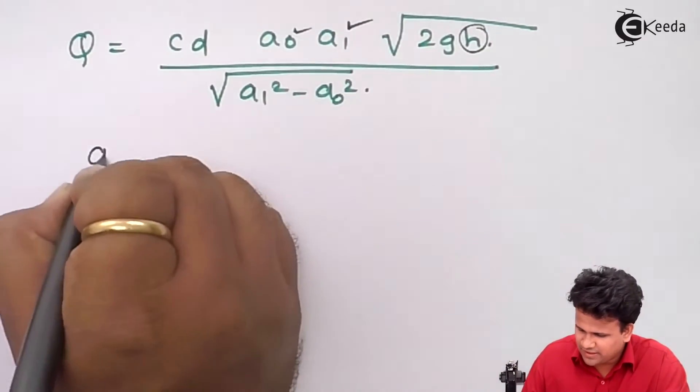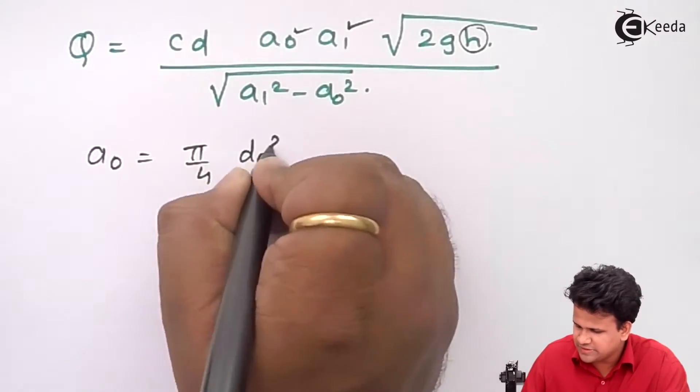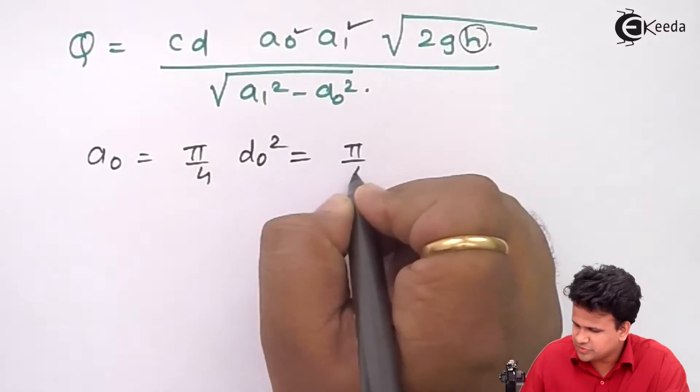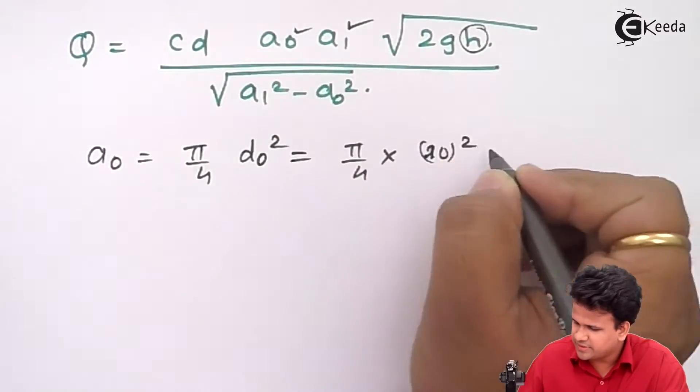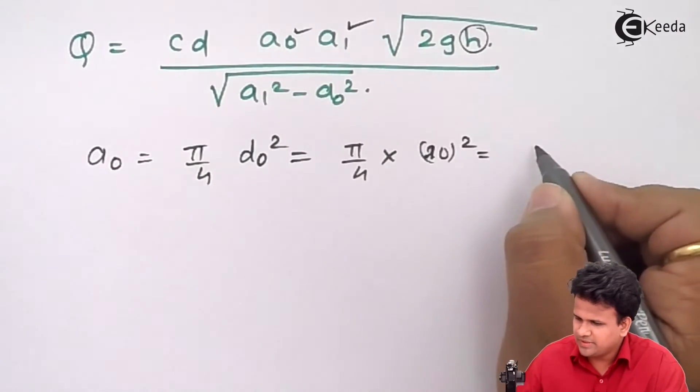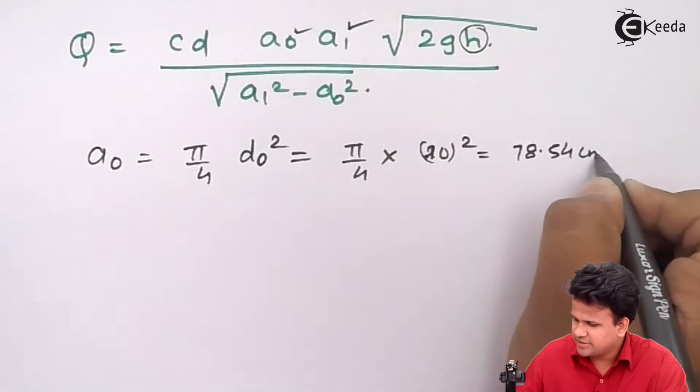Let us calculate value of a0 that is pi by 4 into d0 square equals pi by 4 into 10 centimeter square. This will be equals to 78.54 centimeter square.